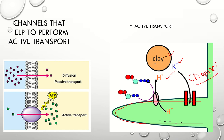The function of channels is to control the entry of minerals or ions inside the membrane. This requires energy for the transport of these ions. Here you can see that ADP is converted into ATP, releasing energy, and this energy is utilized for the transport of these nutrients. This is the main difference: diffusion is passive transport, while active transport uses special channels made of special proteins that utilize ATP to move molecules from low to high concentration.